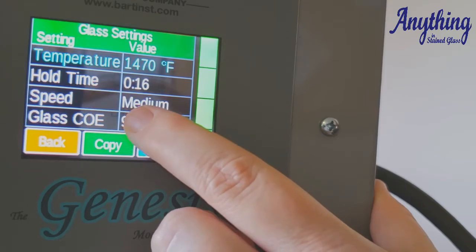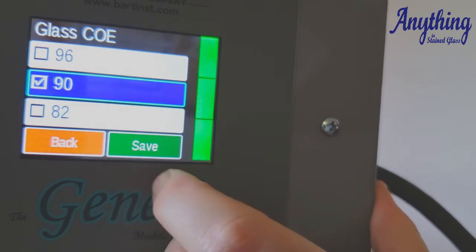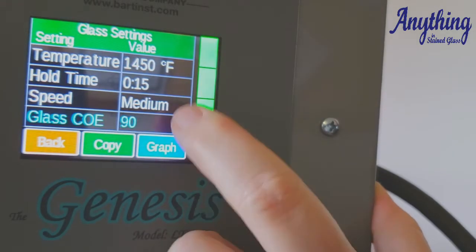So COE 96, well, we don't use 96, so we touch the 96 and we choose the 90. Check the box and save. So now it's changed it.